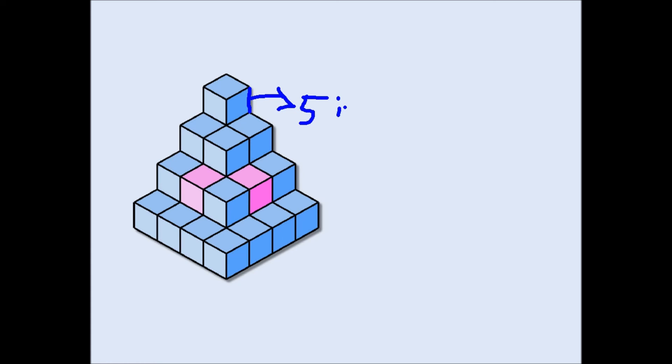What's the volume of each cube? The volume of each cube has to be length times width times height, and in a cube they're all the same. So the volume of each cube has to be, volume of each cube must be 5 by 5 by 5 is equal to 125 cubic inches.